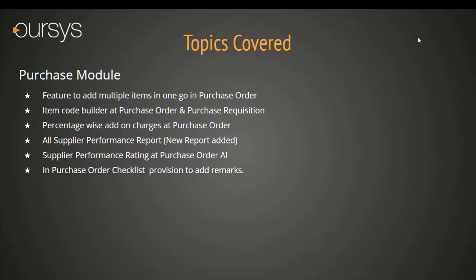Under the Purchase module: Feature to Add Multiple Items in one go in Purchase Order, Item Code Builder at Purchase Order and Purchase Requisition level, Percentage-wise Add-on Charges at Purchase Order, All Supplier Performance Report as MIS Added New Reports, Supplier Performance Rating at Purchase Order under the AI Tool, and in Purchase Order Checklist provision to add Remarks.